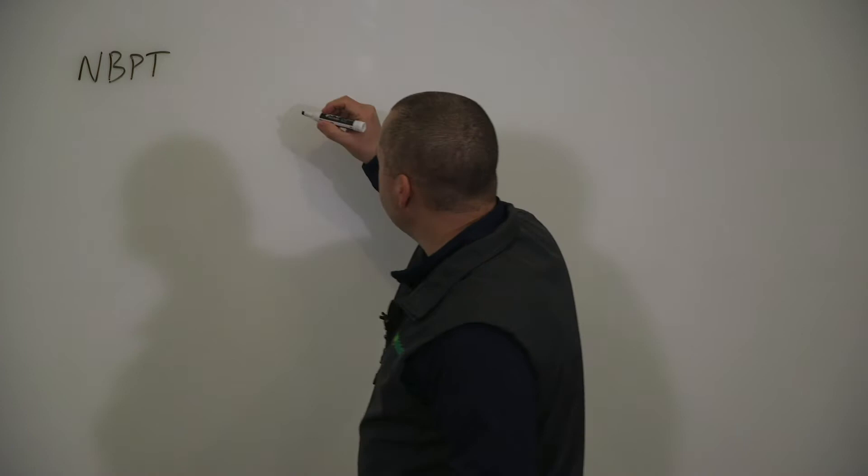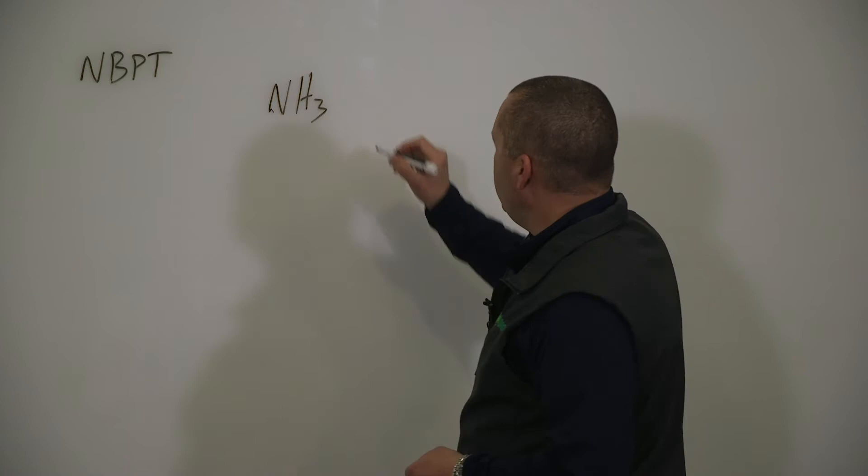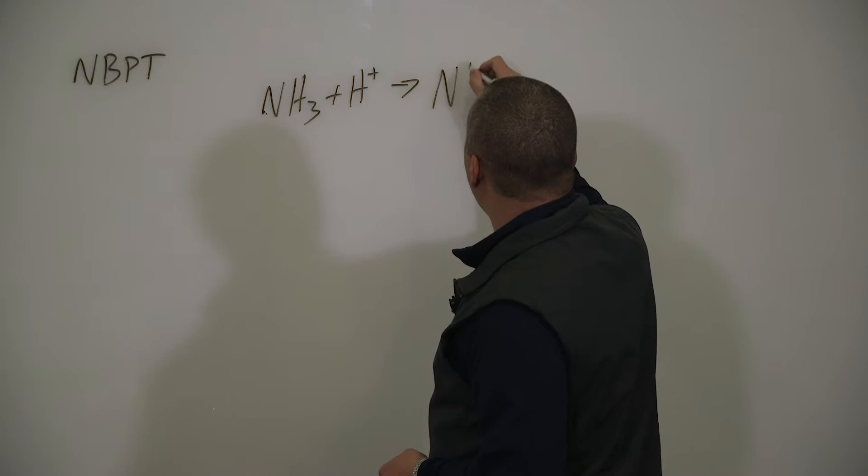So I'd like to walk through the process of how nitrogen reacts in the soil profile. Using anhydrous for example, if you put NH3 in the soil, knife it in, it's going to add a hydrogen pretty quickly and form NH4. Okay? NH4 plus.